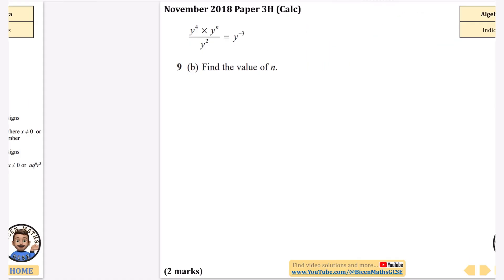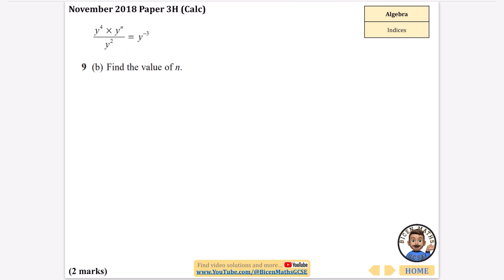So let's continue with this. We now have this time one that looks slightly different. We've given this expression, and there was a different part A. We're just going to find out part B where it wants us to find the value of n. So we know that the powers on top normally add, and then we're dividing by y squared. So we're saying that y to the power of 4 multiplied by y to the power of n, they would be added together, and then we're dividing that by y squared, which would be taking away 2 to get the answer of minus 3.